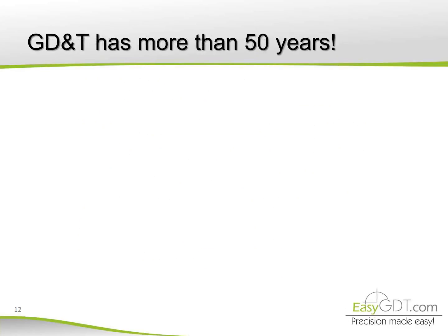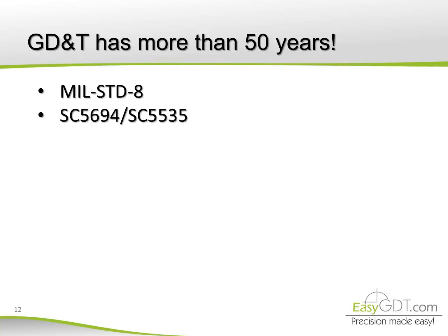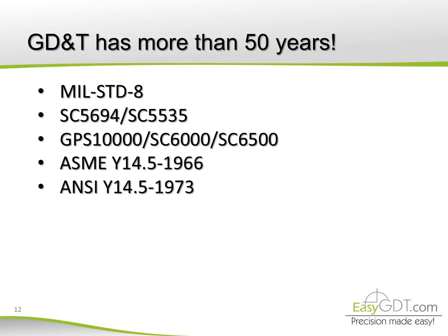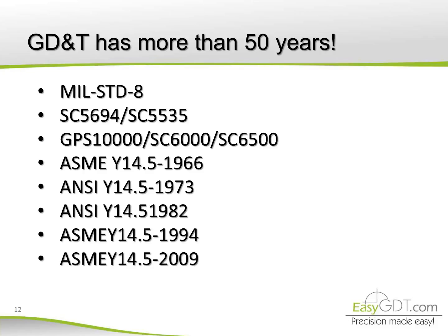Many people believe that GD&T is new, but actually it has more than 50 years. Starting with the military standards from World War II, passing into the hands of the ASME from the 1960s up to the newest revision in 2009, although the most currently used edition is still the 1994 edition.